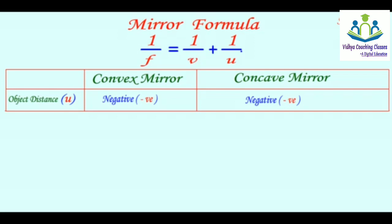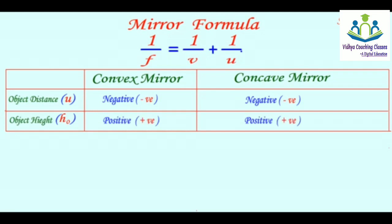The object distance, which we denote U, in the case of convex and concave mirror, will be negative. We denote the height of the object, which will be positive in both cases. Third is focal length.